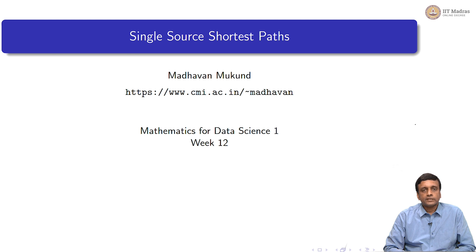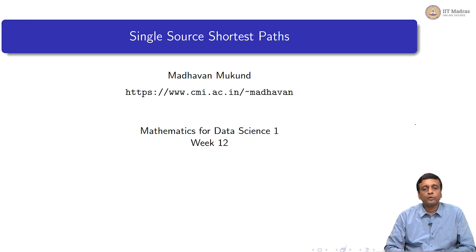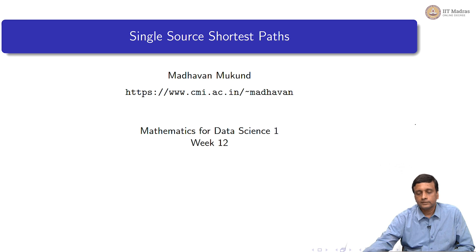We are looking at weighted graphs and shortest path problems on weighted graphs. There are two types of shortest path problem we will focus on: the single source shortest path and the all pair shortest path. Let us look at how we can compute single source shortest paths in weighted graphs.